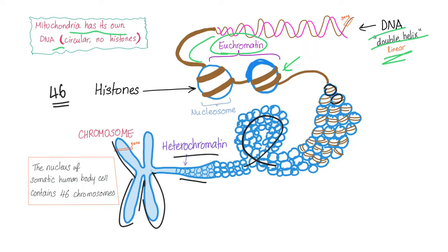Mitochondria has its own DNA. It's circular with no histones. Also, don't forget the nucleus of somatic human body cells has 46 chromosomes.